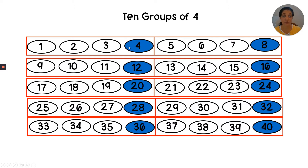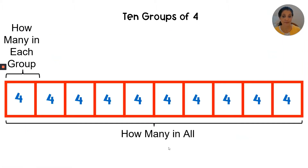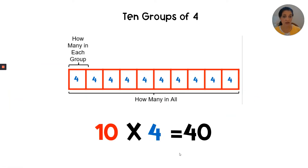It would look like this: one group, two, three, four, five, six, seven, eight, nine, ten groups with four in each group. Now we have ten boxes with four in each box. Each group has four. We counted by four ten times, so ten times four equals forty.